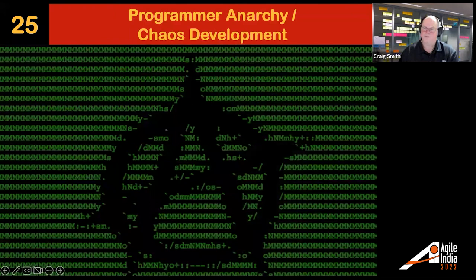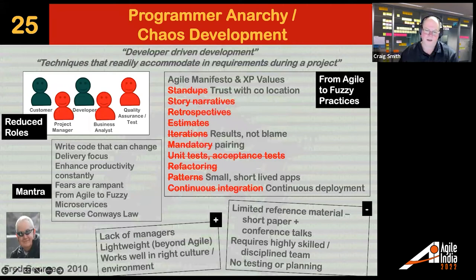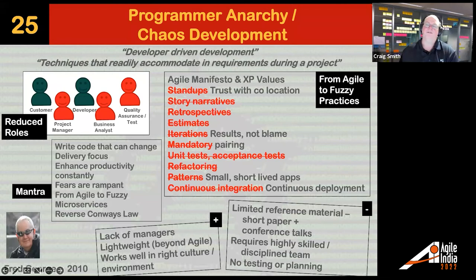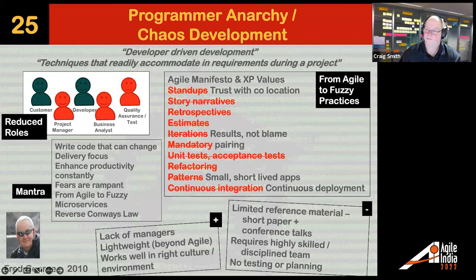Program Anarchy has been renamed to Chaos Development in more recent times. It was the work of Fred George, based on work he did at a company in the UK called Forward, and has been adopted at organizations like GitHub. What they essentially did was move from Agile to very fuzzy practices: no standups, no retrospectives, no managers — just work fast. It's developer-driven development. In some organizations with a very good culture where everyone is committed, this could work really well. Beware — there's no testing or planning, because you're going at speed.